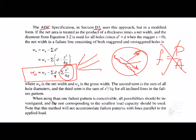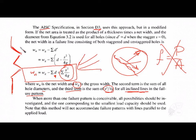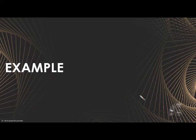Here wn is the net width, wg is the gross width, the second term is the sum of all hole diameters, and the third term is the sum of s²/4g for all inclined lines in the failure pattern. For example, if we have four inclined lines, we multiply s²/4g by four.